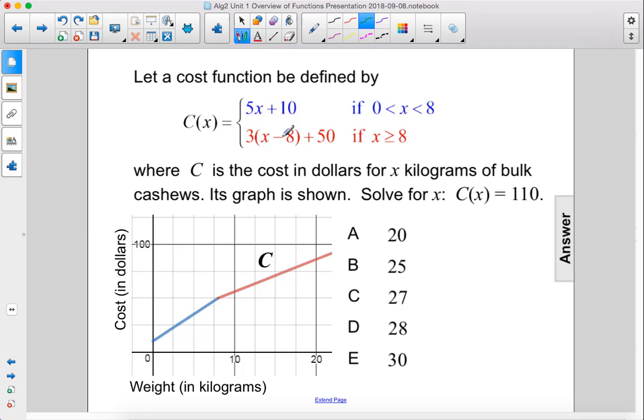We are going to set one of these rules equal to 110 and solve for x, but which one? Well let's see. 110 is going to be about here, so the red line is the line that's going to be intersecting 110.